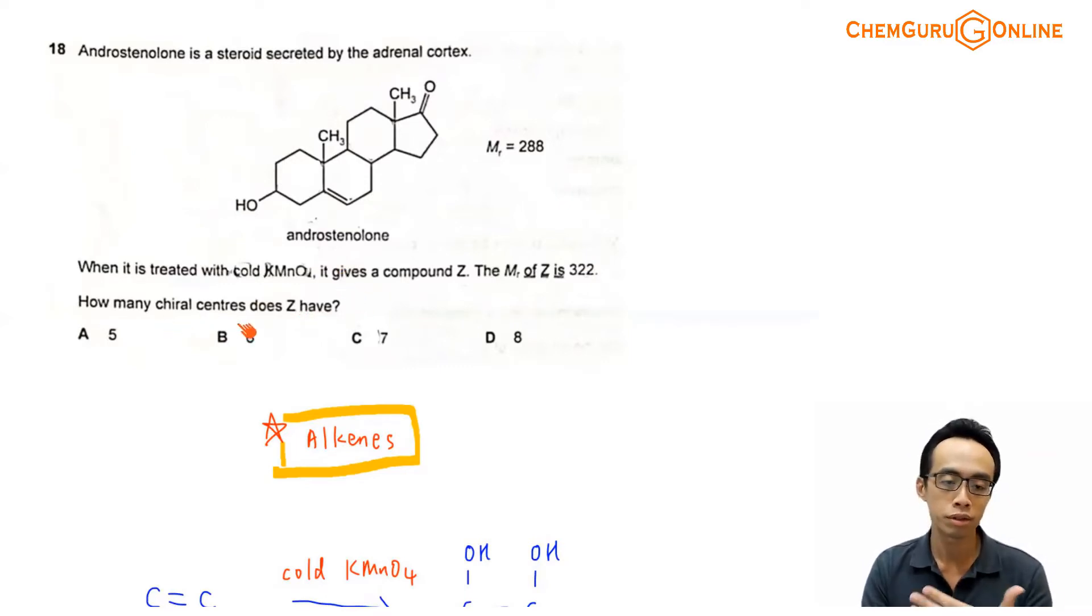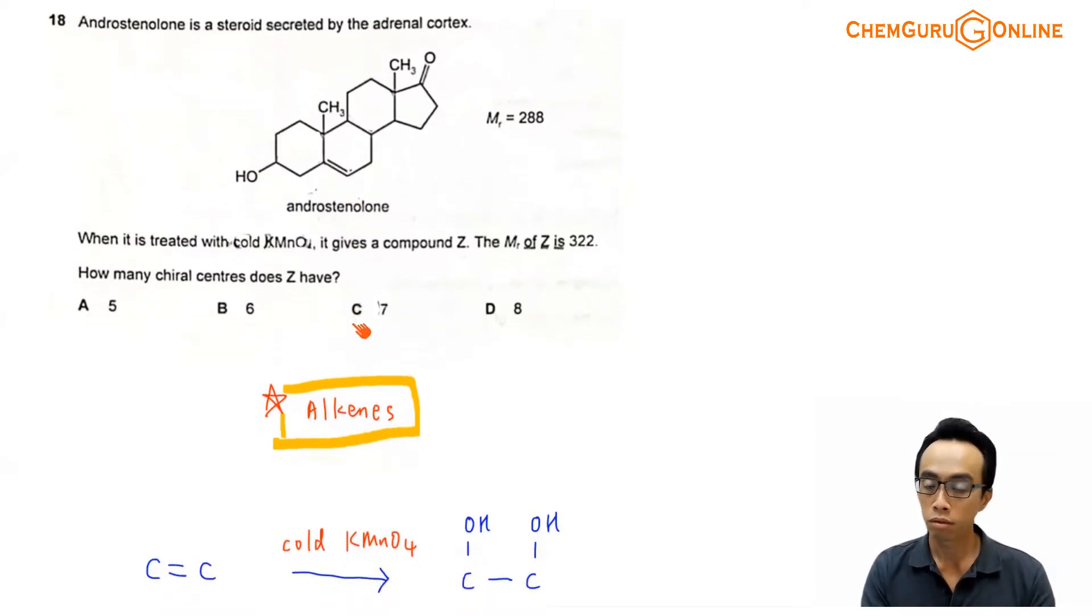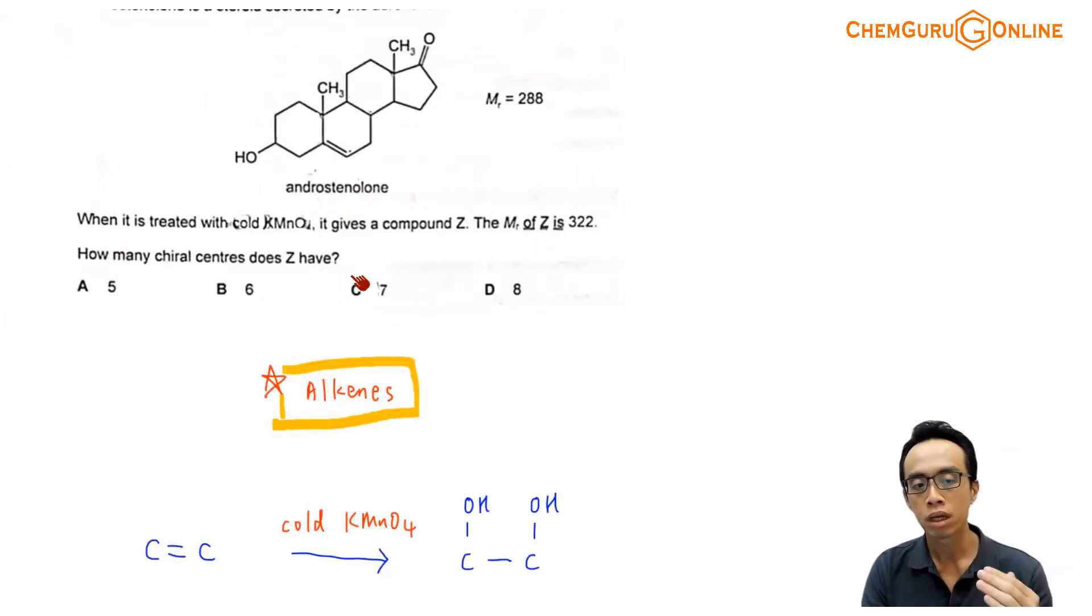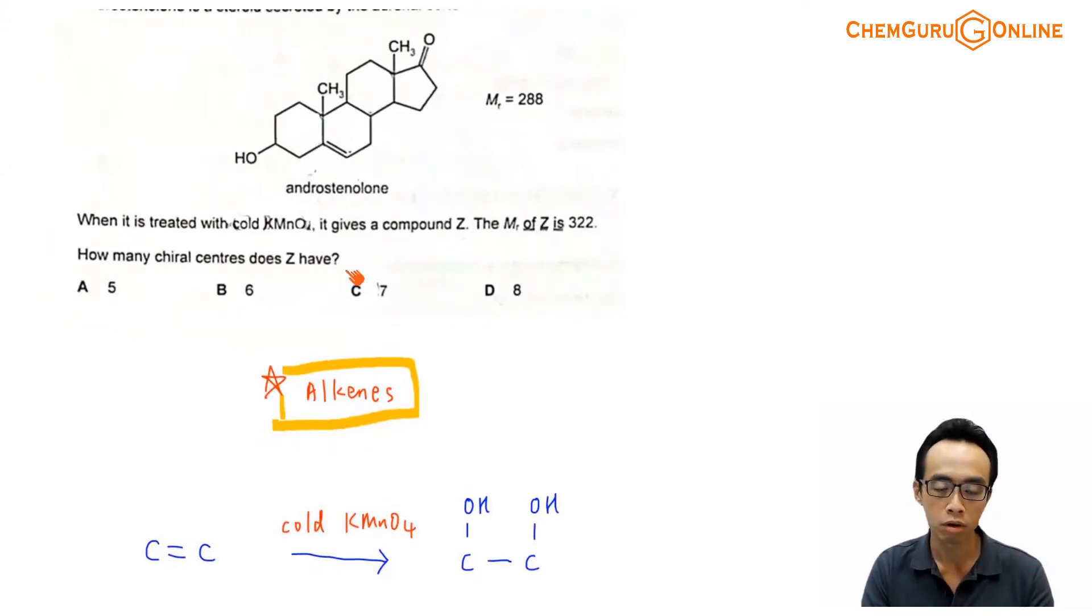So how many chiral centers does Z have? Now we have four options A, B, C, D. Later we want to run through these options. Now the topic tested in this question, if we are treating a compound with cold KMnO4, probably it is under alkenes. But we want to run through each of these functional groups and consider which will be affected by cold KMnO4.